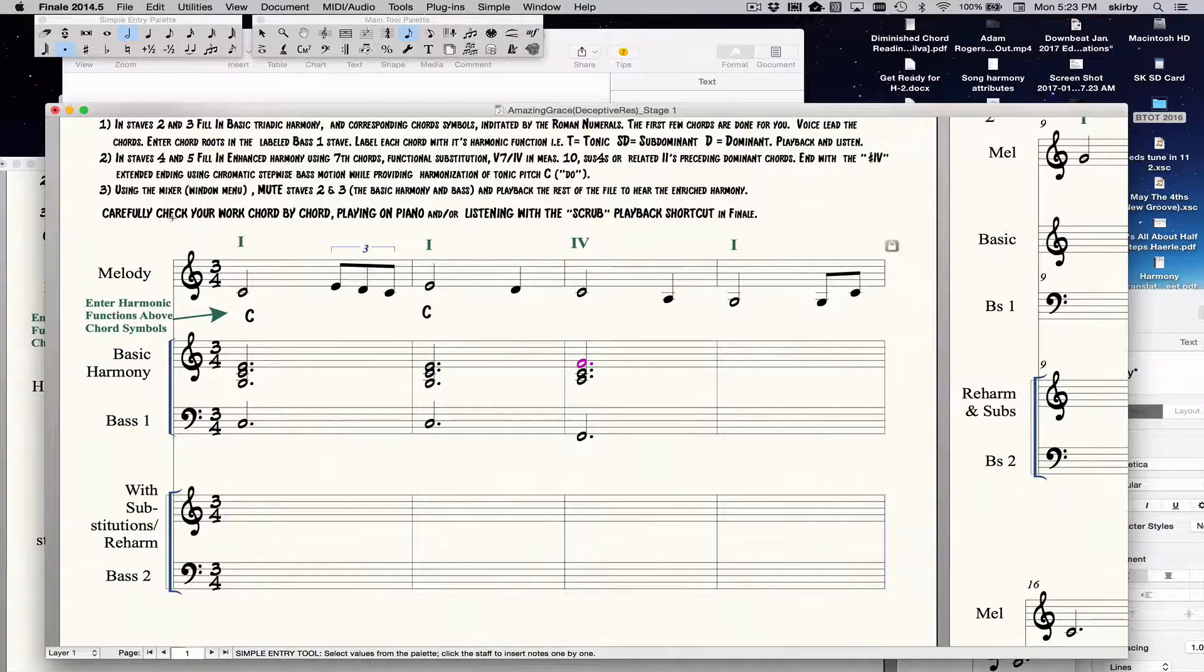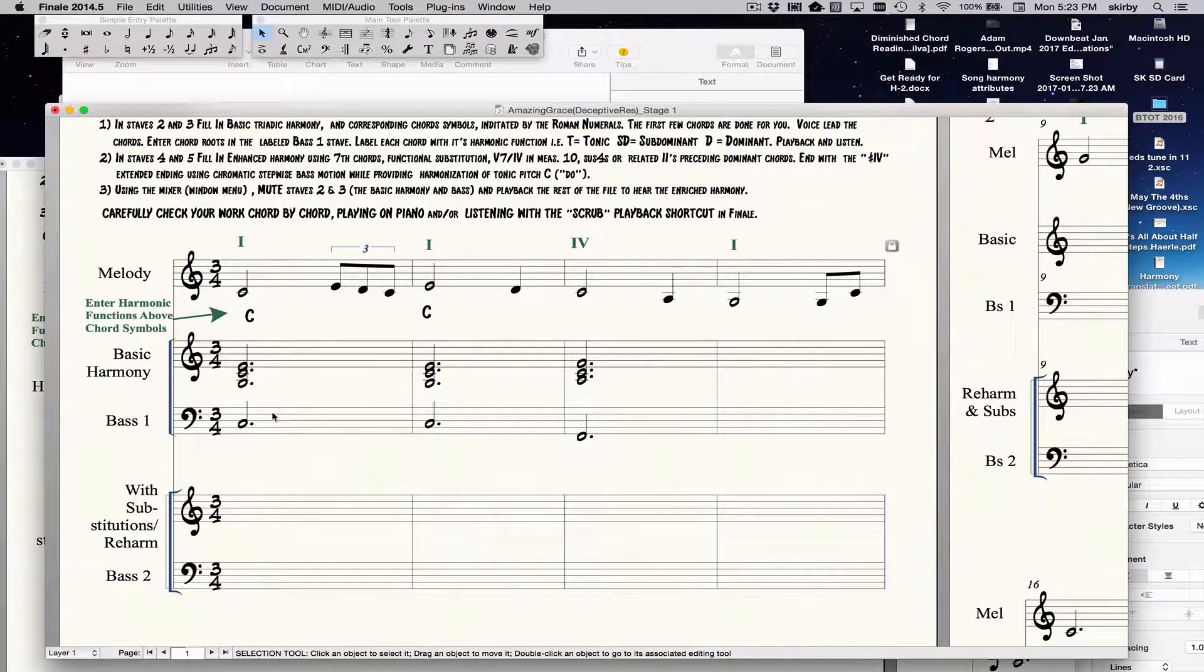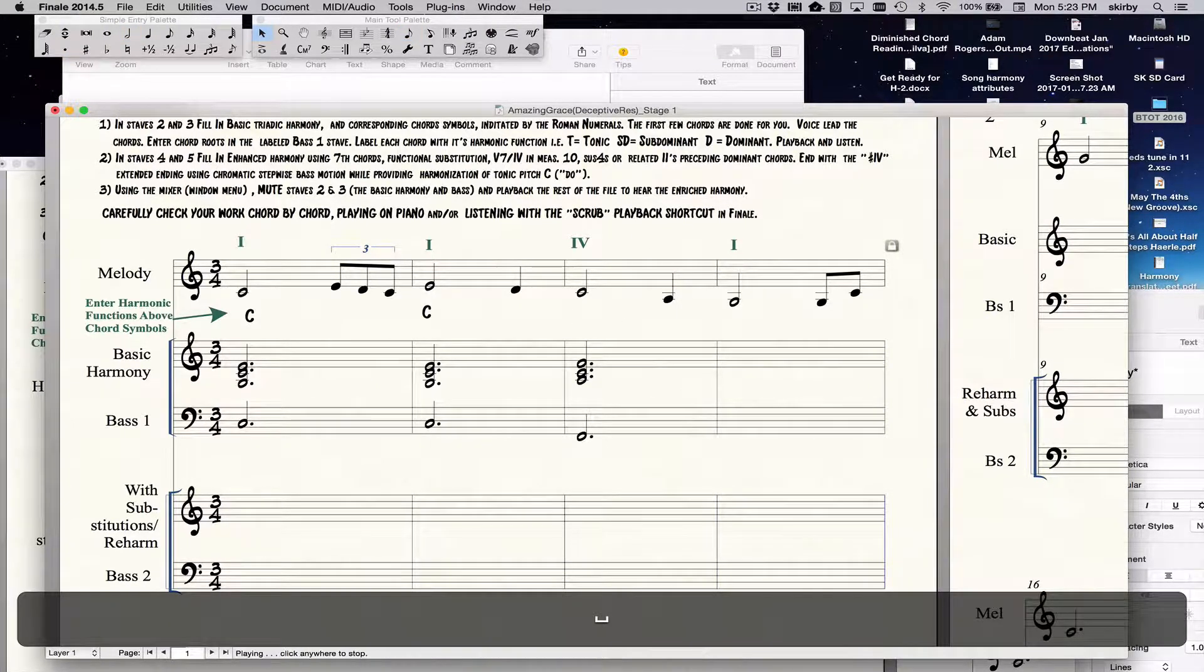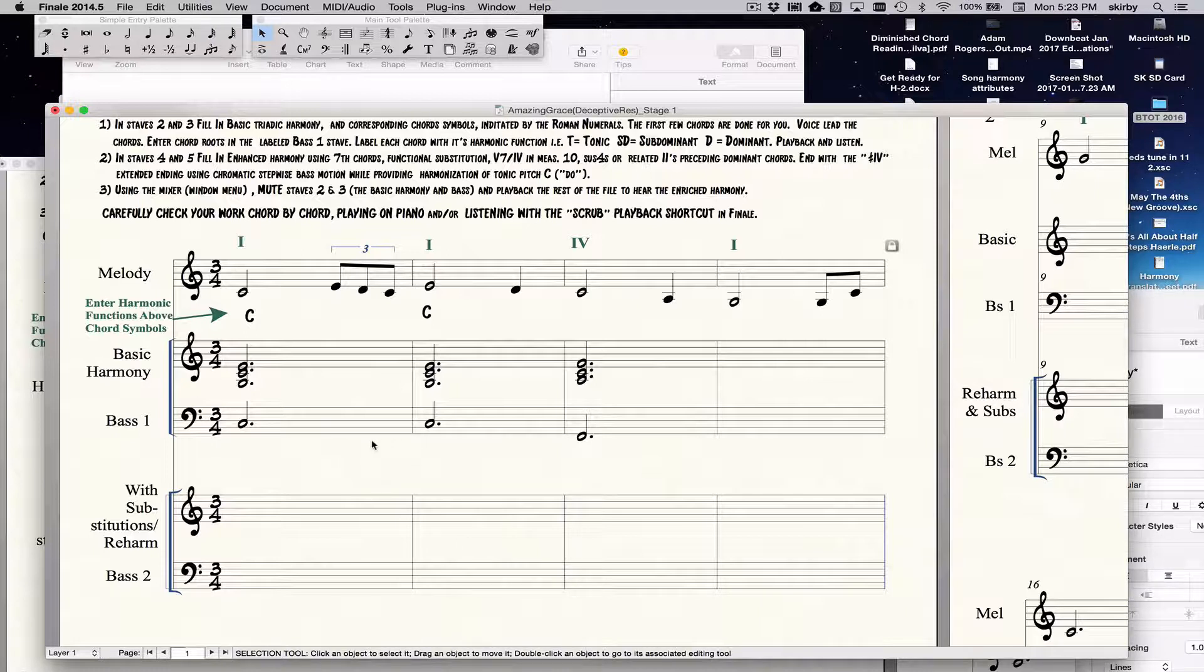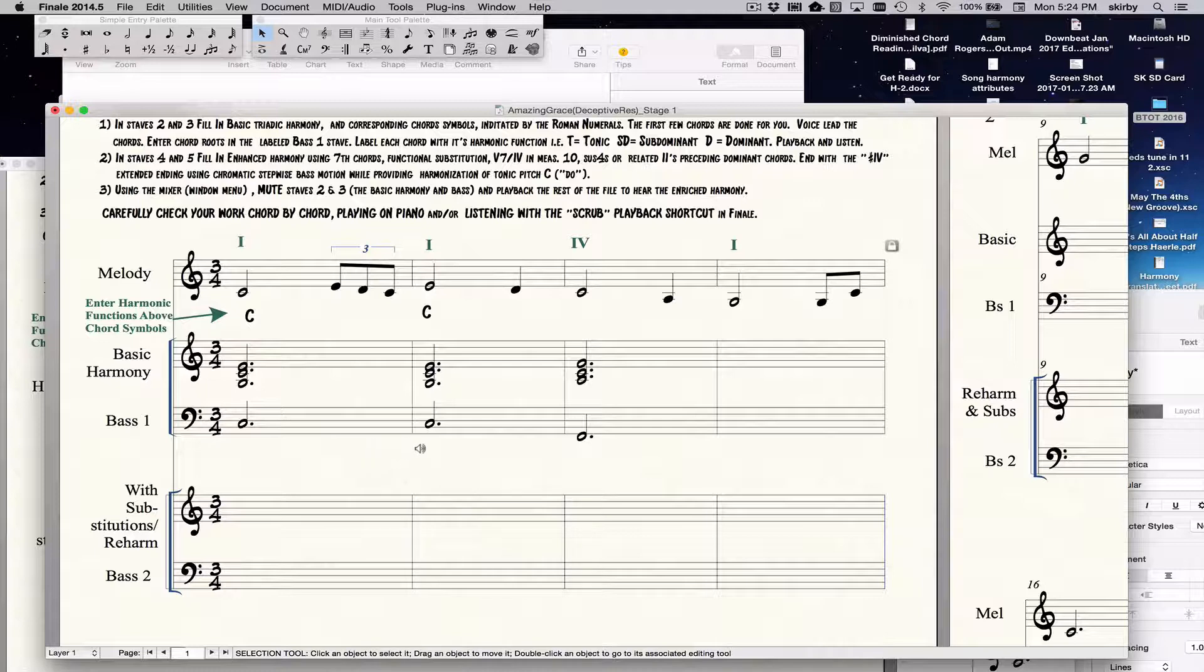Which is appearing on your screen as command shift E and here you can also mute things. And finally we would get to the final revision stage would be to carefully check the work by playing it on piano and/or using the scrub playback shortcut. So they would go through their file and anytime they had a problem they would slowly go and then when they heard an issue they would go and figure out if there was a mistake.